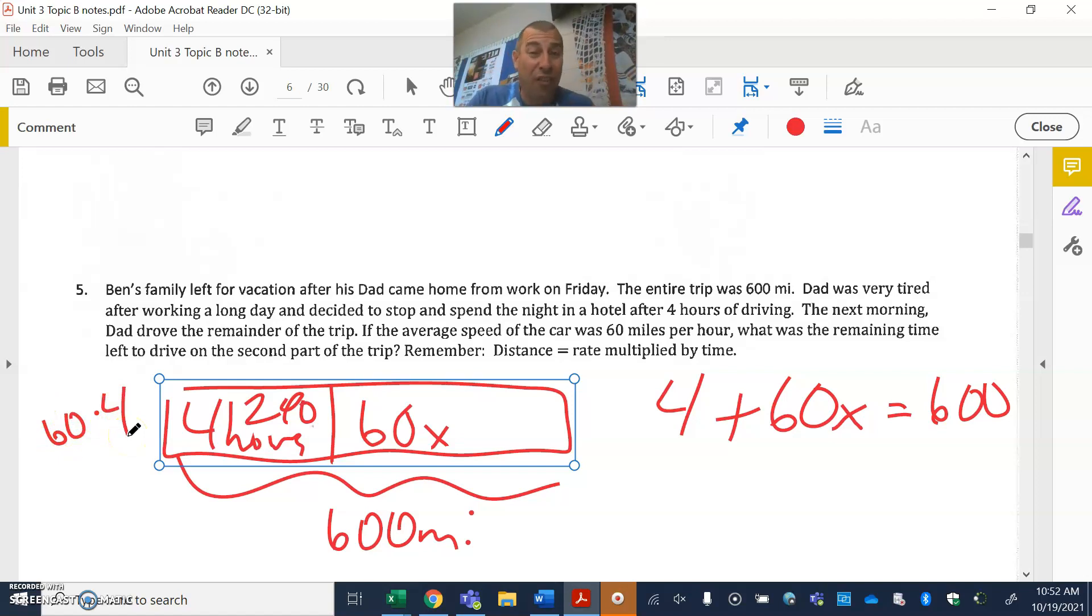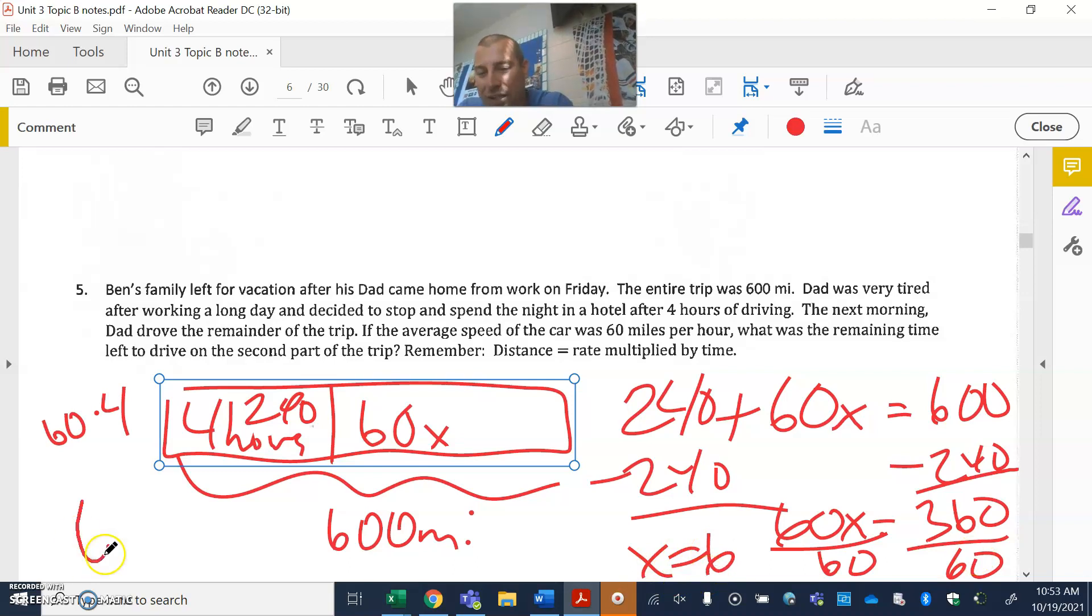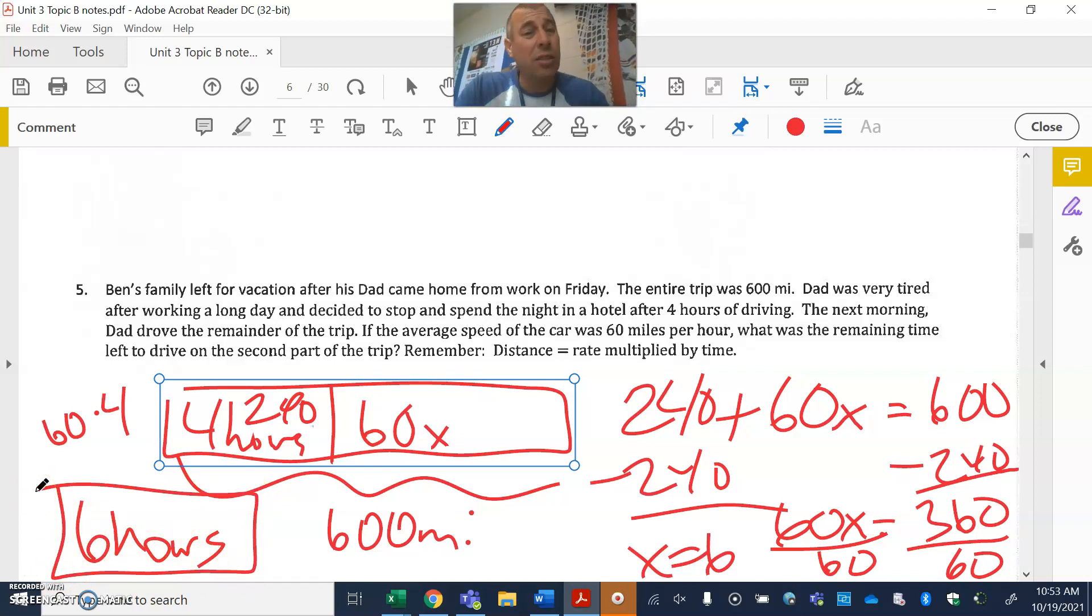Really, even though it's four hours, it's really 240, remember 60 times 4 is 240. So it's not just a 4, it's 240 because it's in miles. Again, we've got to see if things make sense. Now I can subtract my 240 from each side. 60x equals 360. Divide by 60 and we're getting x equals 6 for six more hours. That makes sense why he stopped there and broke up the trip. Ten hours in the car is a while.